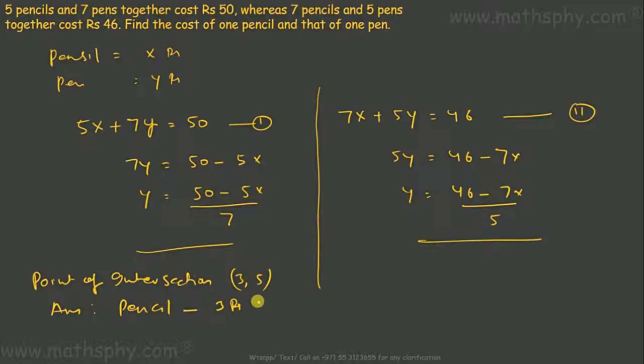And pen is y, so y is 5, which would be 5 rupees per piece. That's the answer for this question through the graph.